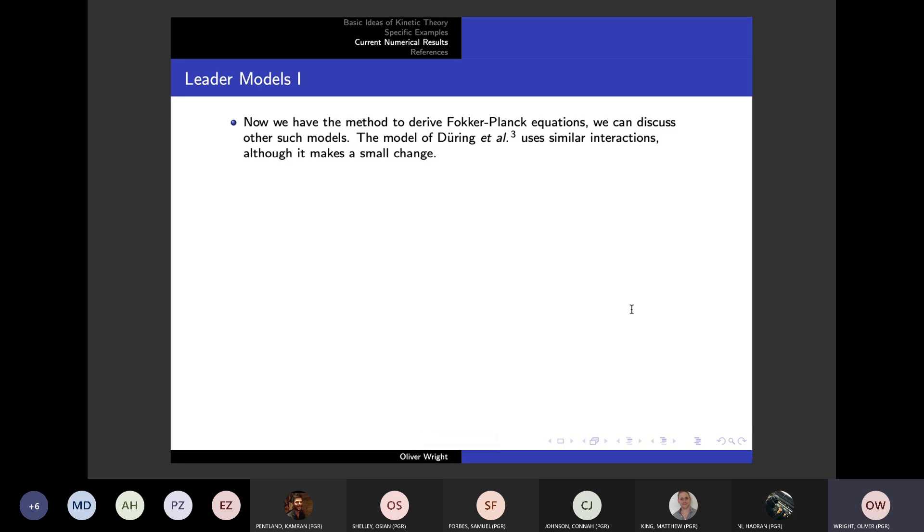Now that we have the general idea of how to come up with these Fokker-Planck equations, we can now discuss other similar models. Here we can discuss the model of During et al, which is similar but allows us to have two different types of species: a leader species and a follower species, which can interact but they interact differently with each other.